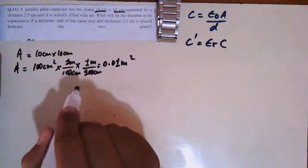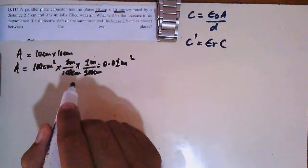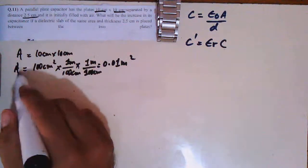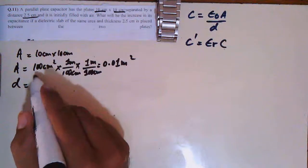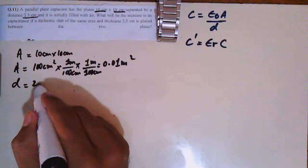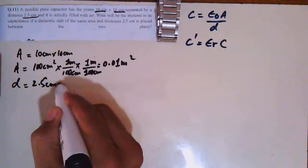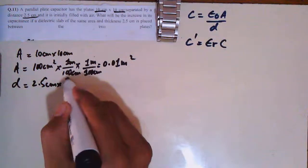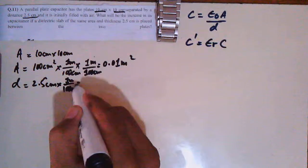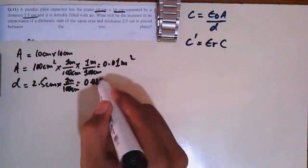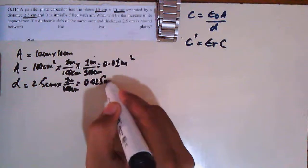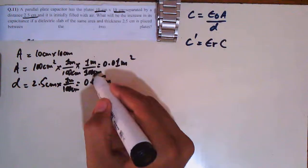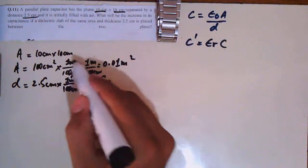So be careful with area conversions. Separated by a distance of 2.5 cm — this is small d. 2.5 cm can also be converted: there are 100 cm in 1 meter, which gives 0.025 meter. Divide by 100 cm so the cm cancels.